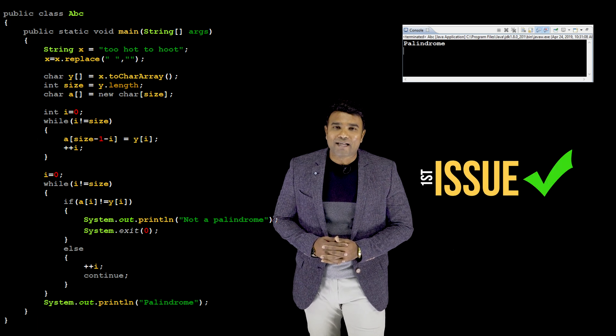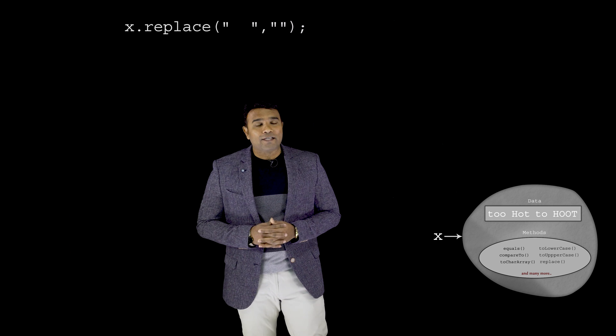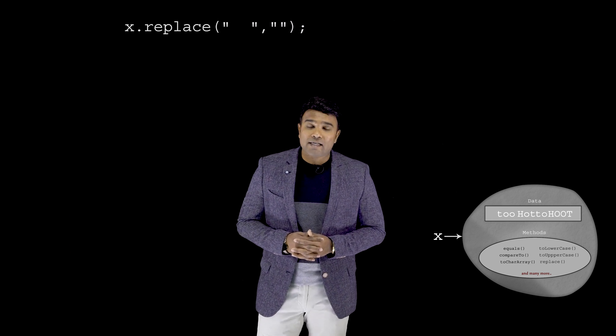Let me tell you how to tackle the second. Let me again begin by considering a new string object with the data too hot to hoot. As you can see, this time the data not just has spaces, it also has a combination of uppercase and lowercase characters. You know how to eliminate the space. This code is going to ensure that all the spaces get eliminated.